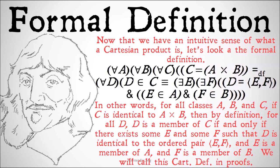For all A, all B, and all C, C is equal to the Cartesian product of A and B means by definition that for all D, D as a member of C implies that there exists some E and there exists some F such that D is equal to the ordered pair E, F, and E is a member of A and F is a member of B.